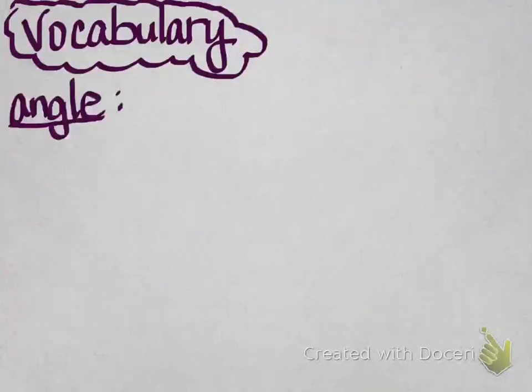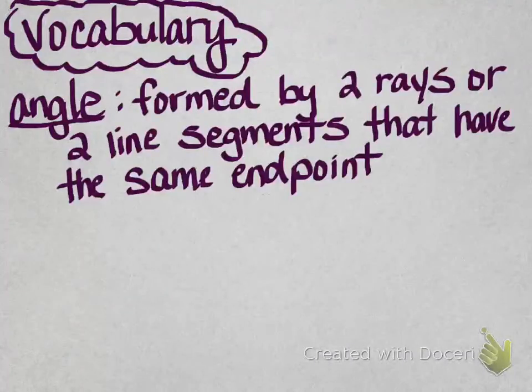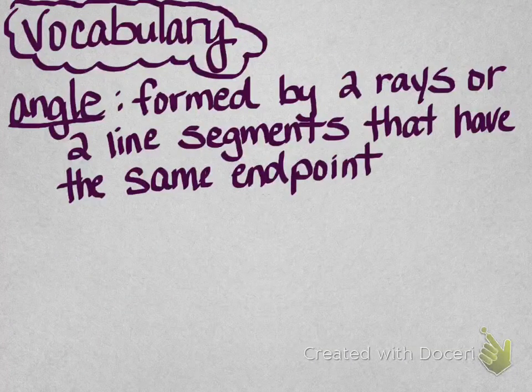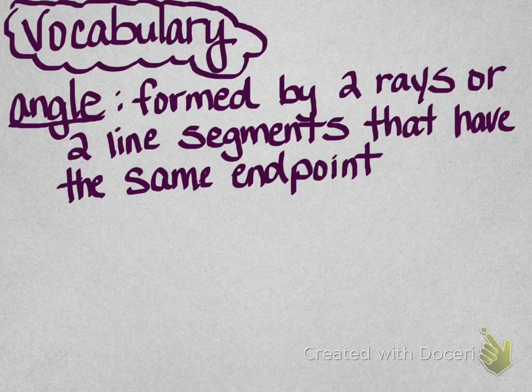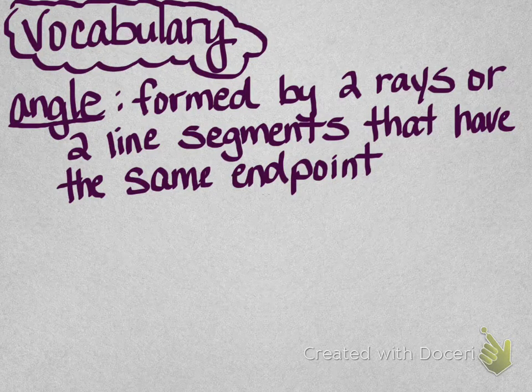We're going to begin with our vocabulary. First word we have is angle, and an angle is formed by two rays or two line segments that have the same end point.